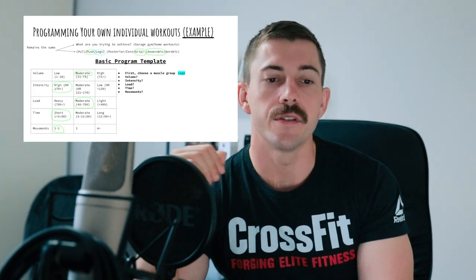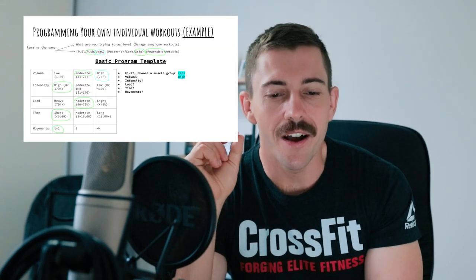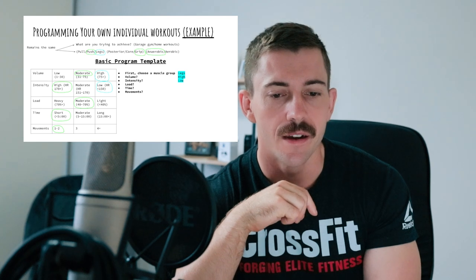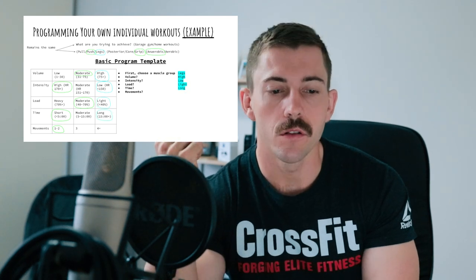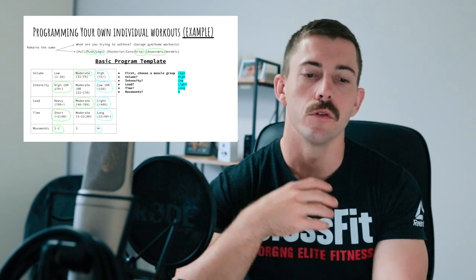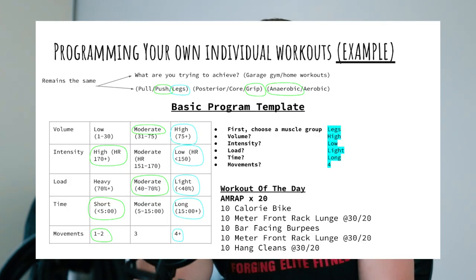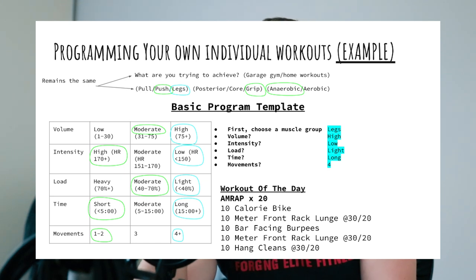That was workout one for the day. For the second workout, we've chosen legs, high volume, low intensity, light load, long workout, and four movements. It would look like: a 20-minute AMRAP of 10 cals on the bike, 10-meter front rack lunge, 10 bar-facing burpees, 10-meter front rack lunge, and 10 hang cleans at 30kg/20kg. This allows you to change the stimulus completely from workout one.